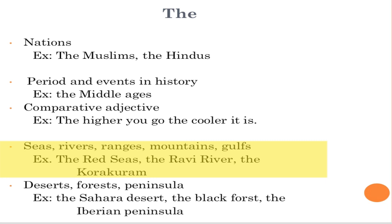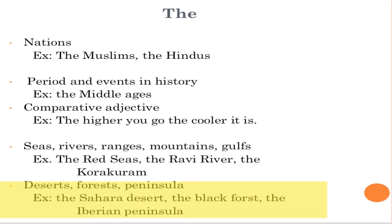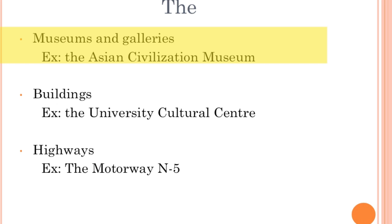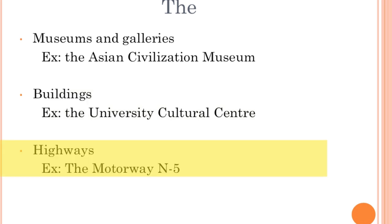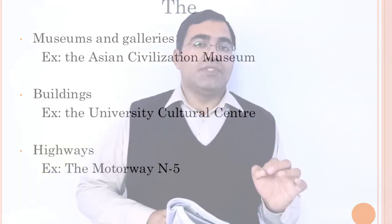Rule number ten: deserts, peninsulas, and forests use 'the' — the Sahara Desert, the Gobi Desert, the Cholistan Desert, the Black Forest, the Iberian Peninsula. Museums and galleries also use 'the'. Calendars and buildings also take 'the'. Rule eleven is highways — 'the' is used with highways. So those are 13 rules where we use 'the'.